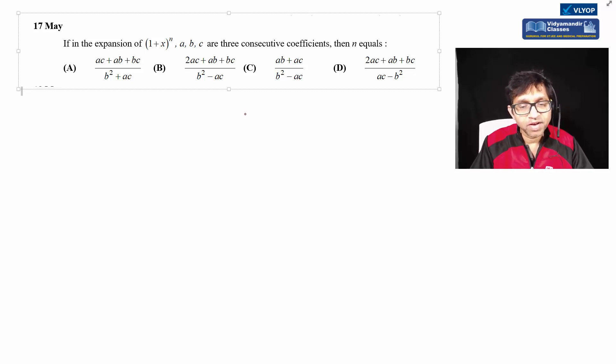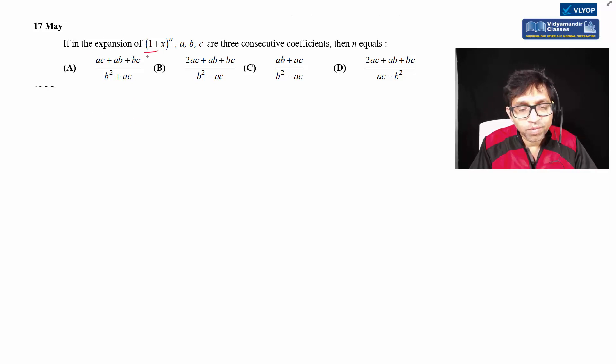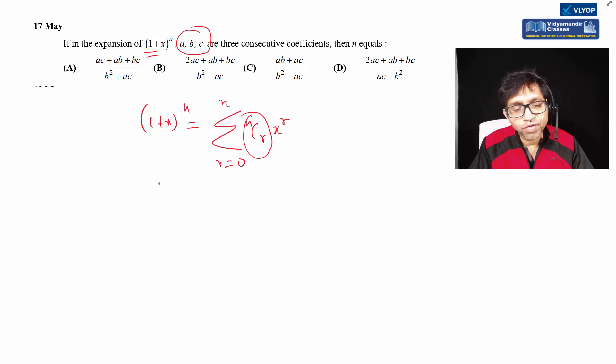In the expansion of (1+x)^n, A, B, C are three consecutive coefficients. The expansion is summation nCr x^r where r varies from 0 to n. So the coefficients are three consecutive terms: nC(r-1), nCr, nC(r+1).